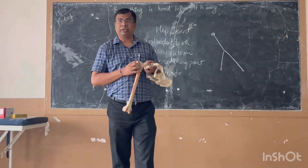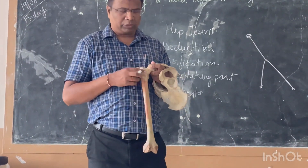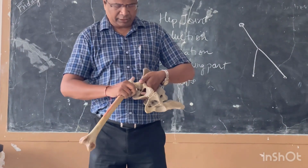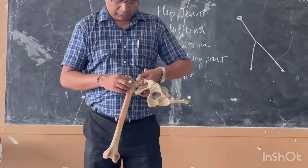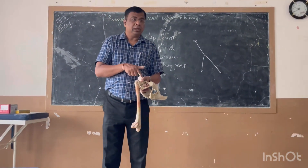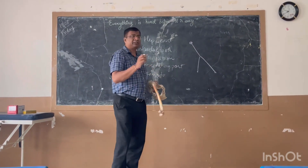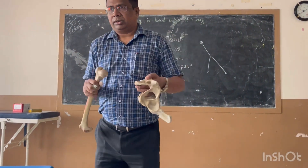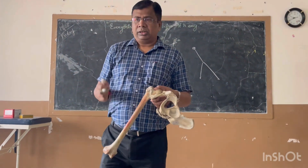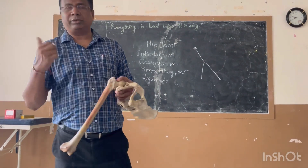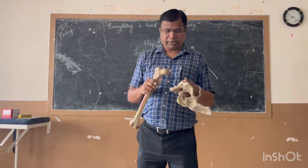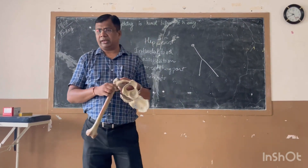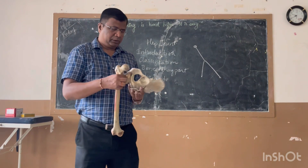The two limbs of the Y are attached to the upper and lower parts of the intertrochanteric line. So the iliofemoral ligament starts from the anterior inferior iliac spine and goes to the upper and lower parts of the intertrochanteric line. It is a very strong ligament — the strongest in the body. Its most important function is to prevent the trunk from falling backwards, anchoring the hip bone upon the femur. To summarize: inverted Y-shape, stem attached to the anterior inferior iliac spine, two limbs to the upper and lower intertrochanteric line.